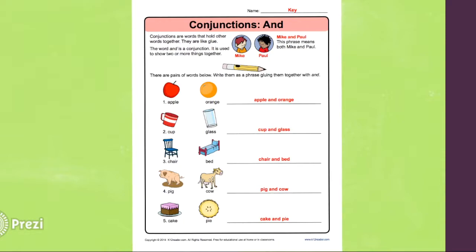For number three, you have chair, bed. So you would say chair and bed. Number four says pig, cow. So you would say pig and cow.